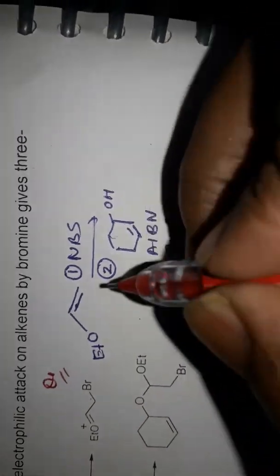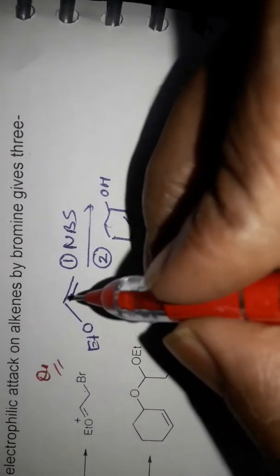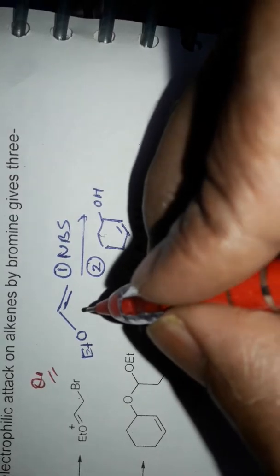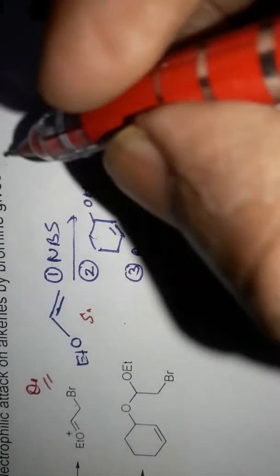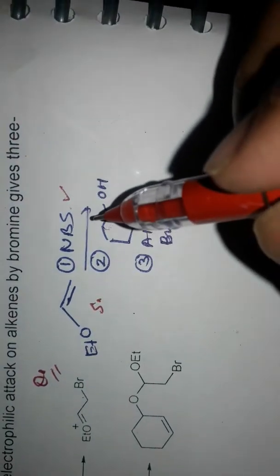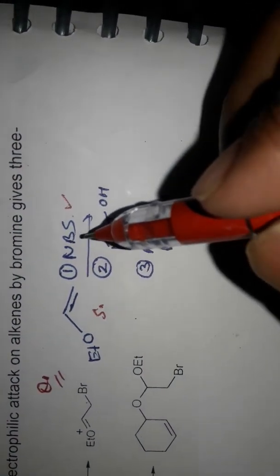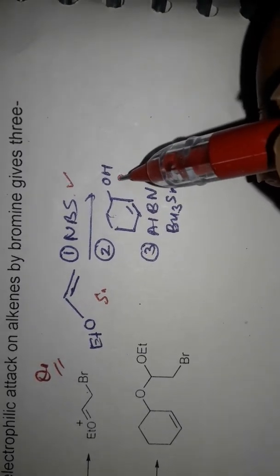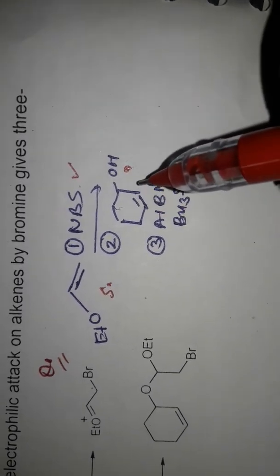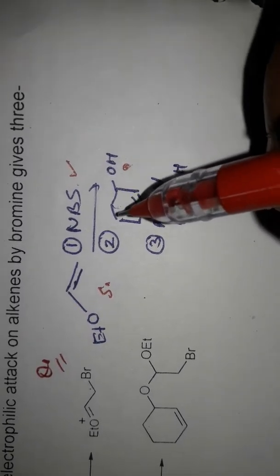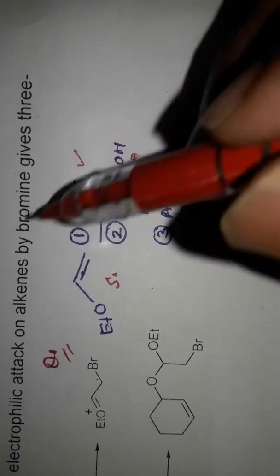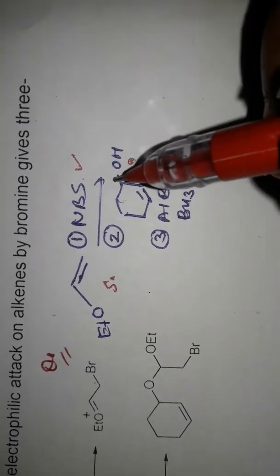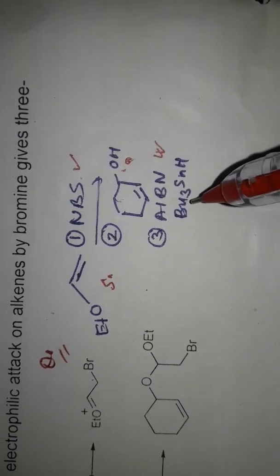Hello everyone, today we are going to discuss an organic chemistry problem. In this problem, the starting material is shown here, and N-bromosuccinimide (NBS) is the first reagent added. Then this is the second starting material, which will be combined here.